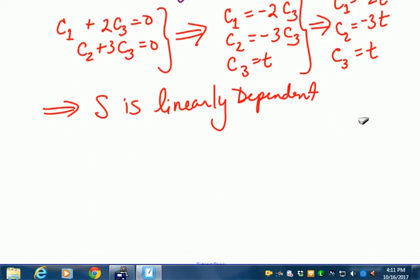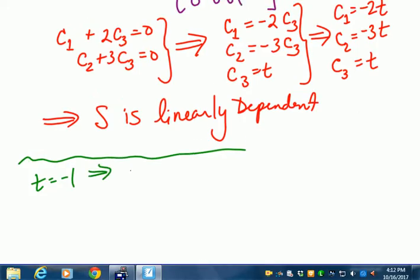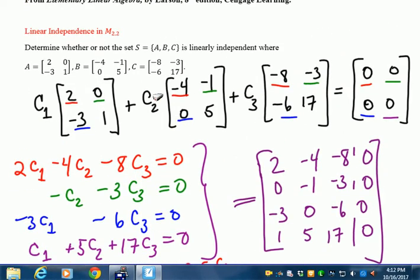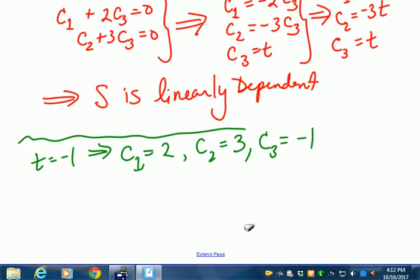Just for fun, let's let T be some number. What if T equals negative 1? Well, if T equals -1, what do we know about C1? C1 equals positive 2, C2 equals positive 3, and C3 equals negative 1. Now, what does that mean in terms of our original linear independence definition equation? It means that 2A plus 3B minus C has to equal the zero vector, which is the 2 by 2 matrix with all zeros in its entries.